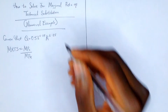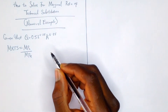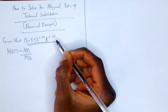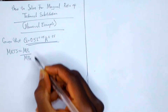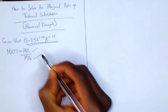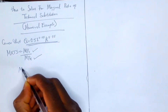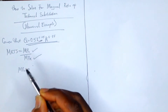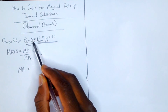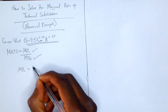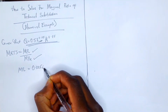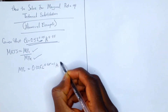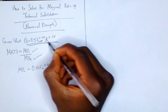Now let's solve a numerical example. Given our Cobb-Douglas production function, we have to find the marginal product of labor and then the marginal product of capital. To find the marginal product of labor, we differentiate with respect to L: 0.25 is multiplied by 0.5, giving us 0.125, then L^(0.25 minus 1) times K^0.75, keeping K constant.